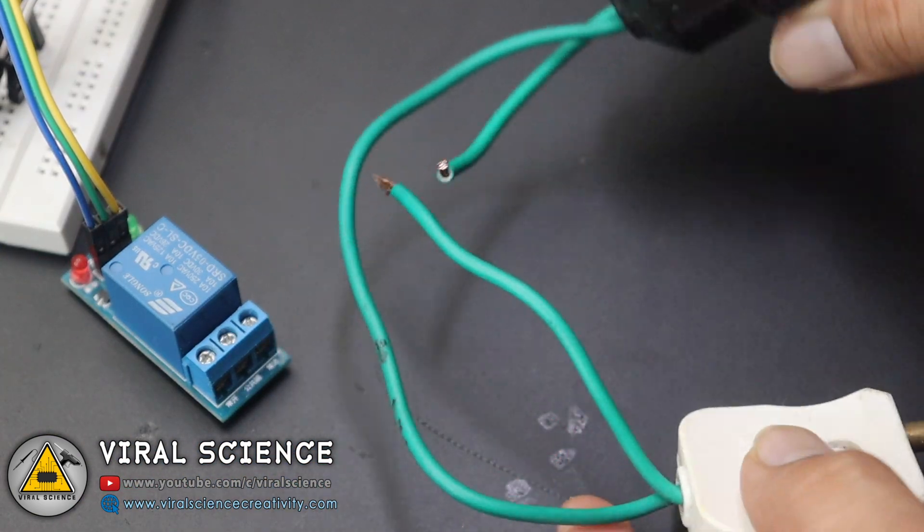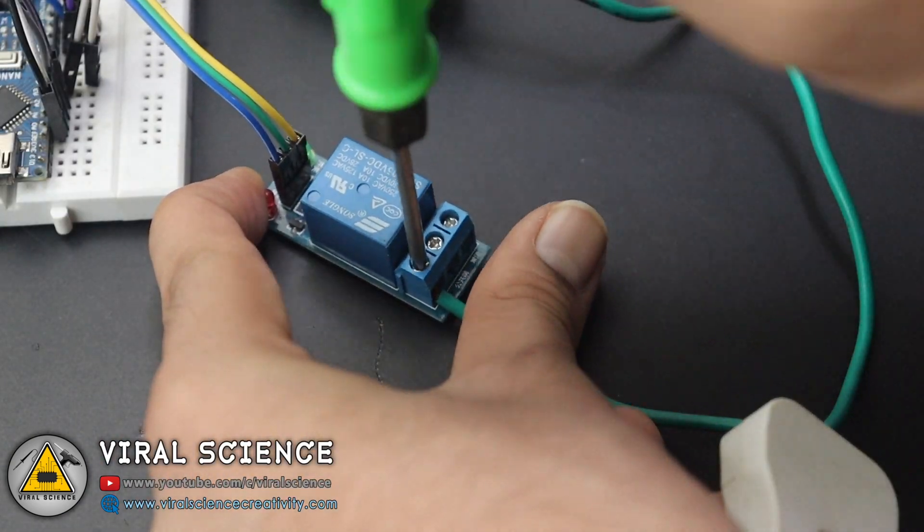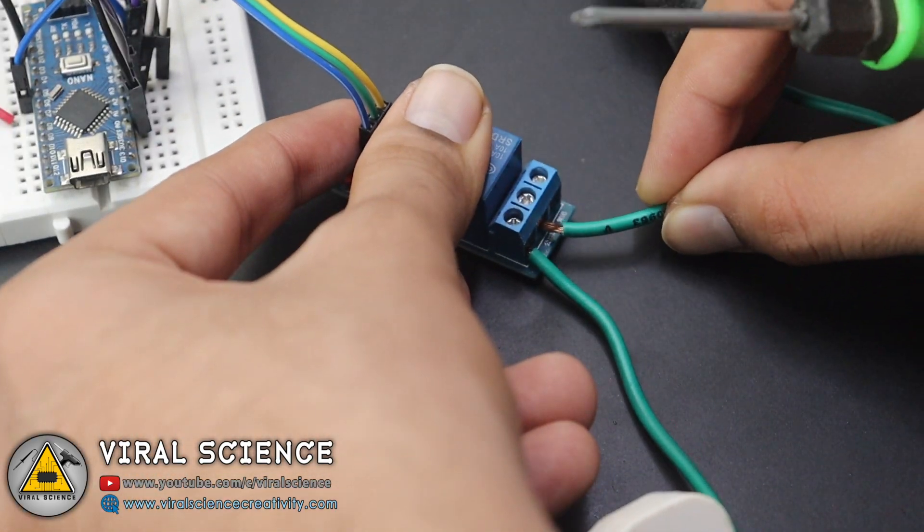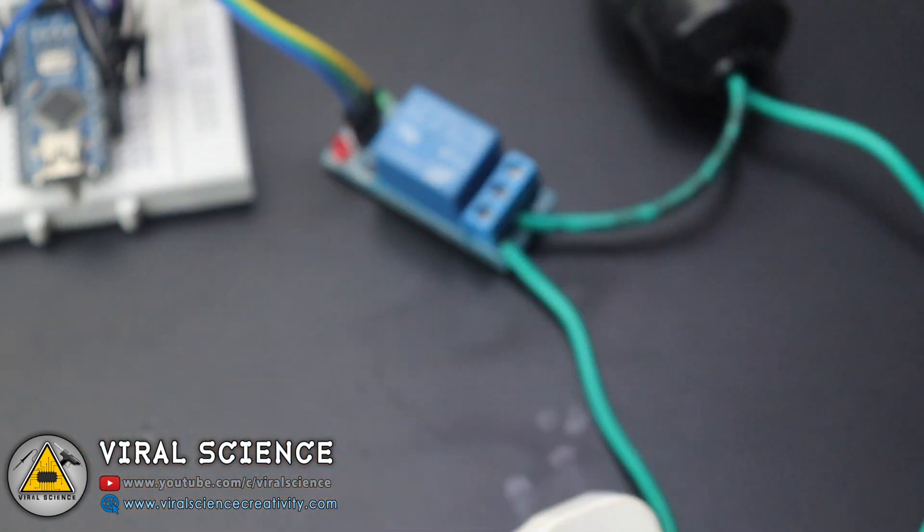Now we'll connect the bulb holder to our relay module. I have cut one of its wires and we'll connect both the ends of this wire to our relay module. Make sure you be very careful while doing this as we will be using a high voltage current over here.